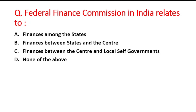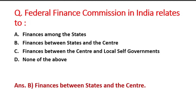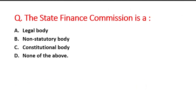Next question: Federal Finance Commission in India relates to — option A is finances among the states, B is finances between the states and the Centre, C is finances between the Centre and the local self-government, and D is none of the above. The right answer is option B, that is finances between the states and the Centre.